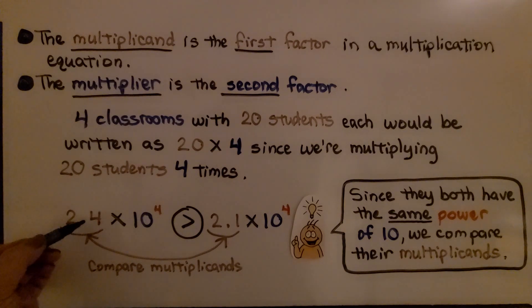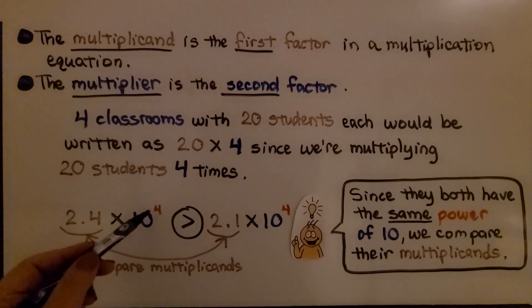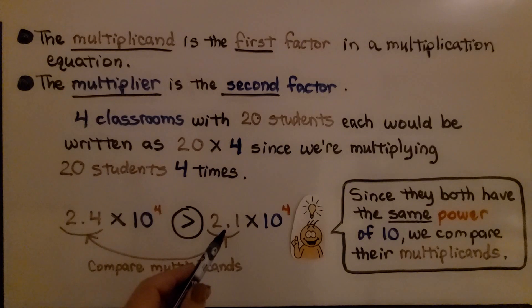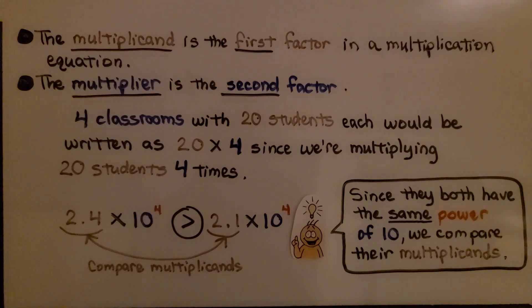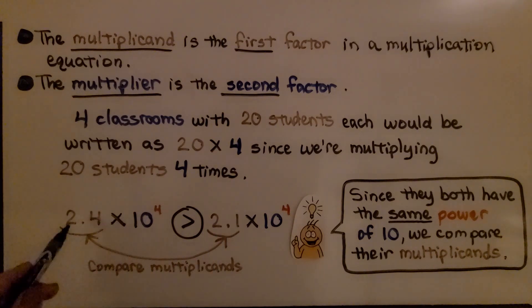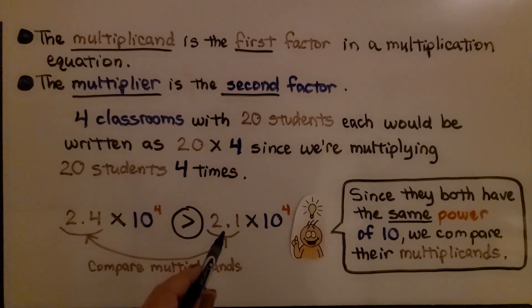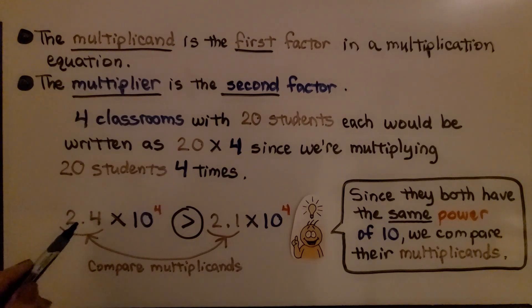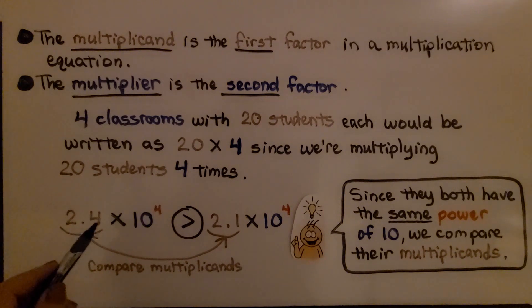Here we have 2 and 4 tenths times 10 raised to the fourth power, and 2 and 1 tenth times 10 raised to the fourth power. They have the same exponent for their power of 10, so we compare their multiplicands — the first number in a multiplication equation. Since 2 and 4 tenths is greater than 2 and 1 tenth, this scientific notation is greater than this one.